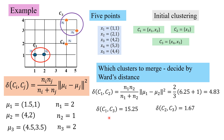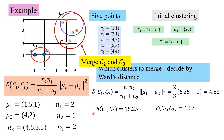Delta(C1, C3) is 15.25 — that is the change in SSE when merging C1 and C3. For delta(C2, C3), it is 1.67. Since this distance is the shortest, we choose to merge C2 and C3.